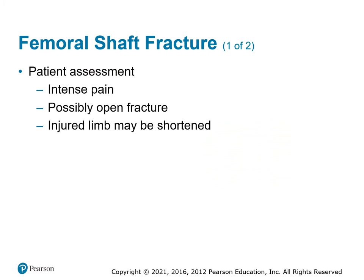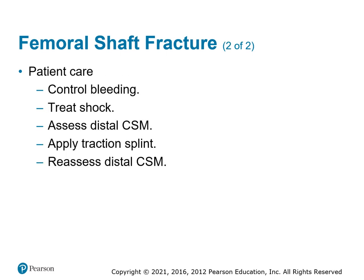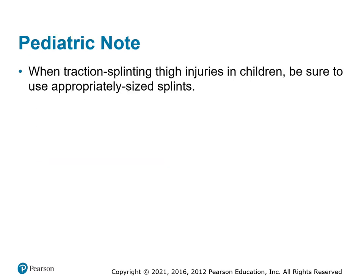Femoral shaft fractures: possible open fracture. This takes a lot of energy to fracture — more like a motorcycle hit, a crash, auto-pedestrian, or bicycle crash. Stop the bleeding, treat for shock. If they have an open fracture with the bone out, we do not apply the traction splint — we only apply traction if the bone is interior. Once you're done applying it, check the CSM and document that again.